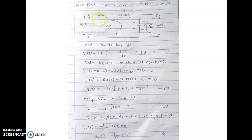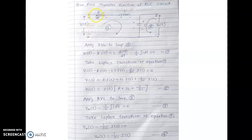Moving from plus to minus gives minus — the voltage drop across the resistor — which is the current I(t) times resistance R. The voltage drop across the inductor VL is L times dI/dt. So the equation becomes: V(t) minus voltage drop across resistor minus voltage drop across inductor minus voltage drop across capacitor equals 0, since the summation of V in a closed loop is 0. The voltage drop across the capacitor is 1/C times the integral of I dt, equal to 0. This is equation number 1.